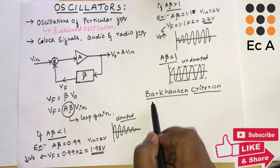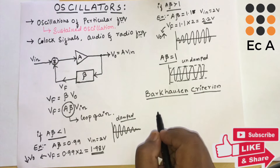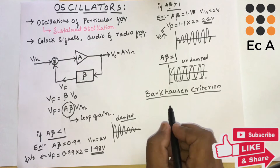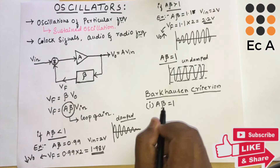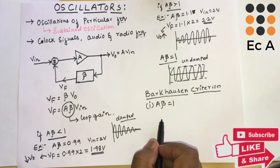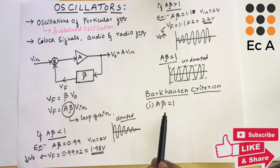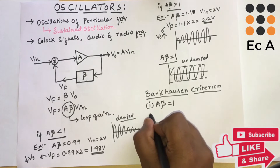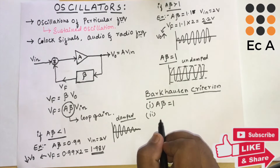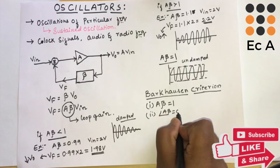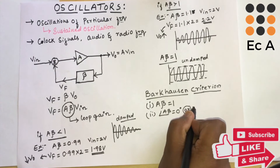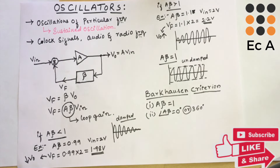Now let us see the Barkhausen criteria. The Barkhausen criteria explain two conditions to get sustained oscillation. The first condition is that A·beta should be equal to 1, meaning the loop gain should equal 1. The second condition is that the phase difference between input and output should be equal to 0 degrees or 360 degrees to get sustained oscillation at the output.